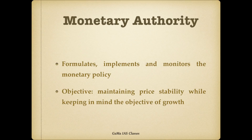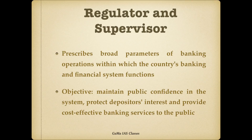RBI plays the role of monetary authority — it formulates, implements, and monitors the monetary policy with the objective of maintaining price stability while keeping in mind the objective of growth. RBI also acts as a regulator and supervisor, prescribing broad parameters of banking operations within which the country's banking and financial system functions. The objectives are to maintain public confidence in the system, protect depositors' interest, and provide cost-effective banking services to the public.